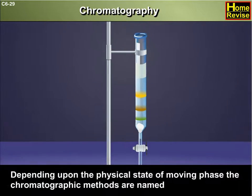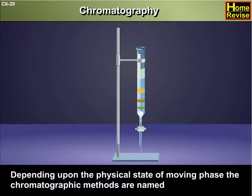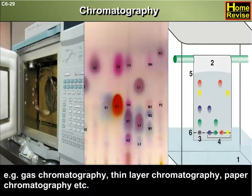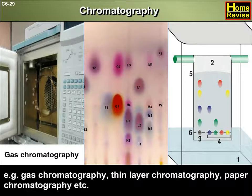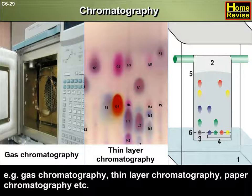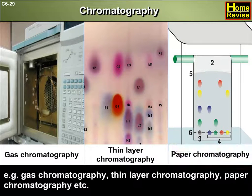Depending upon the physical state of the moving phase, the chromatographic methods are named. For example, gas chromatography, thin layer chromatography, paper chromatography, etc.